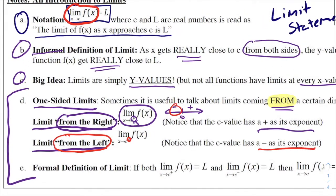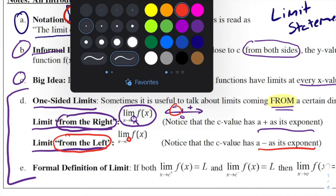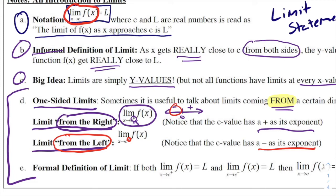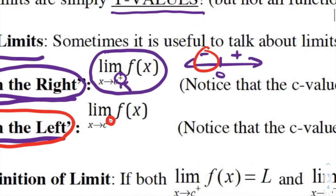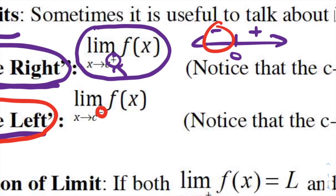Sometimes we see limits that have no exponents at all on the c value — that is an overall limit, or a limit from both sides. And then sometimes we have limits with that plus or minus exponent, which gives us a direction — whether it's from the left or from the right.